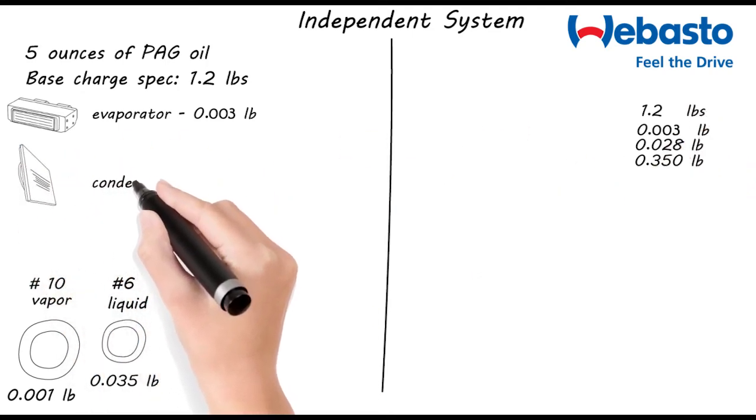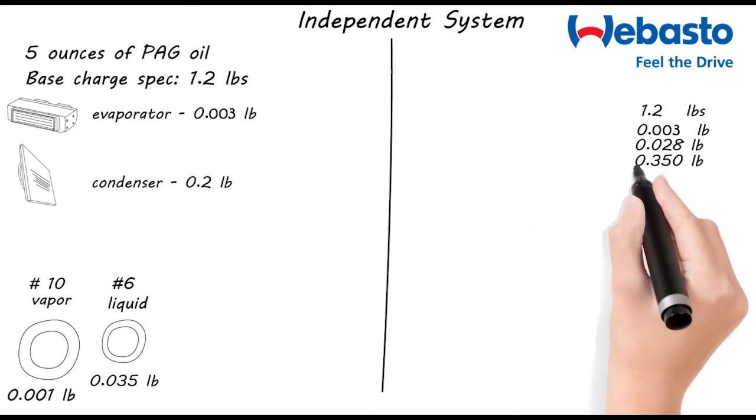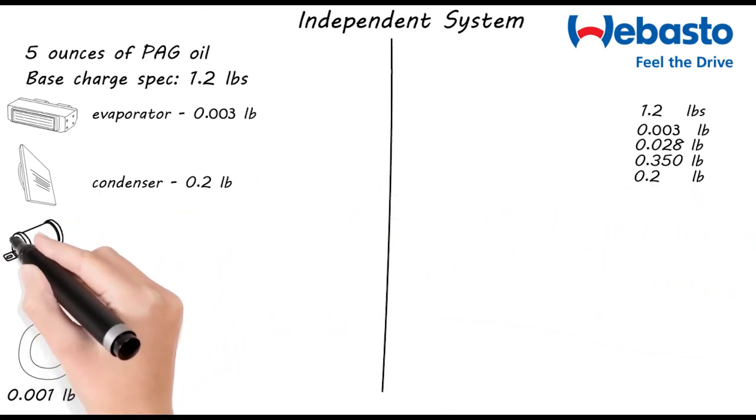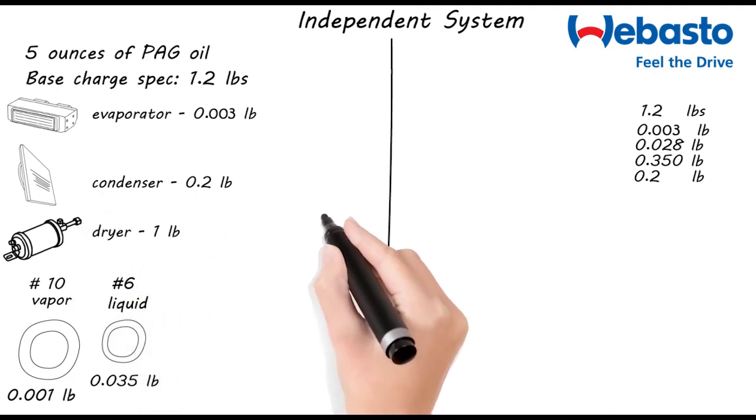The condenser holds a little less than a quarter of a pound, so we'll add 0.2 pounds. And we'll add 1 pound for the receiver dryer.